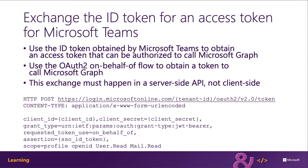The OAuth 2 on-behalf-of flow requirements are as follows: set the grant type to the urn:ietf:params OAuth JWT bearer URN string; the assertion is the ID token obtained from Microsoft Teams; the requested token use is set to on-behalf-of; and the scope is a space-delimited list of all the permissions your app needs to call Microsoft Graph. You also use the registered Azure AD app's client ID and client secret to authenticate the service with Azure AD. This request is sent to the Azure AD token endpoint, and the tenant ID can be retrieved from the TID claim included in the ID token received by Microsoft Teams.